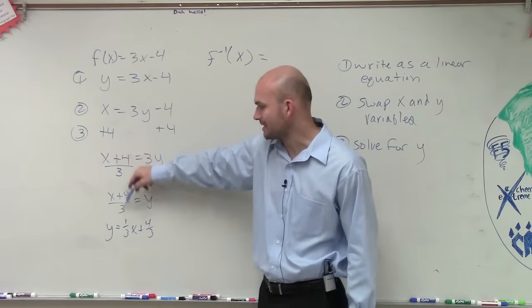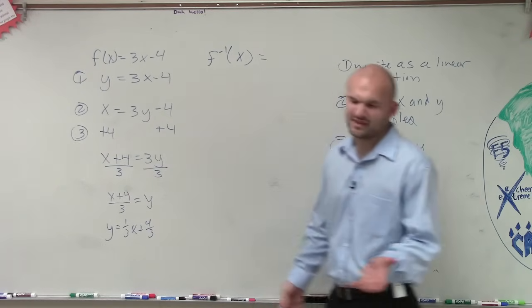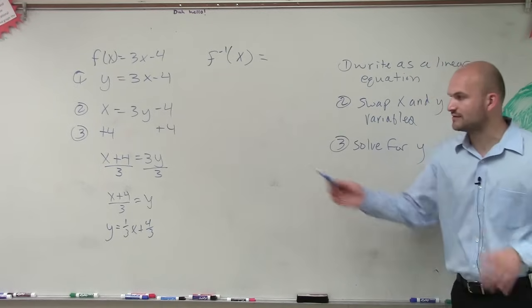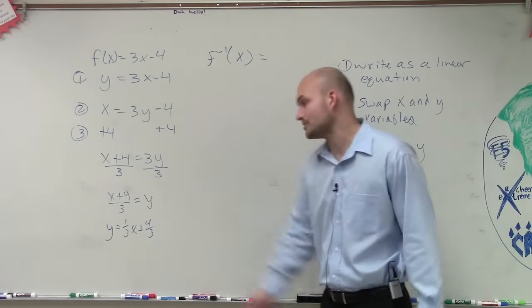So one thing we can do is divide the 3 into both of those terms. So then we have a slope and a y-intercept. But for this case, I'm not asking you to graph it. So leaving it in that form is fine. But if you're to graph it, you might want to remember how to do that.